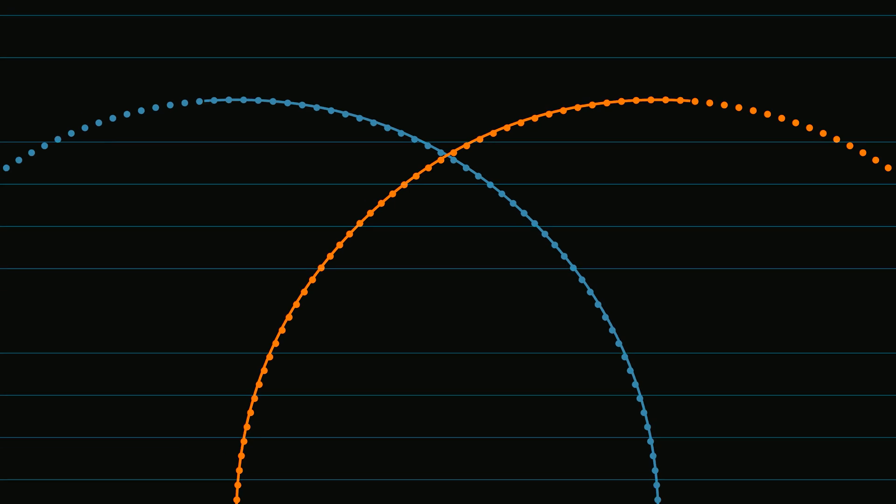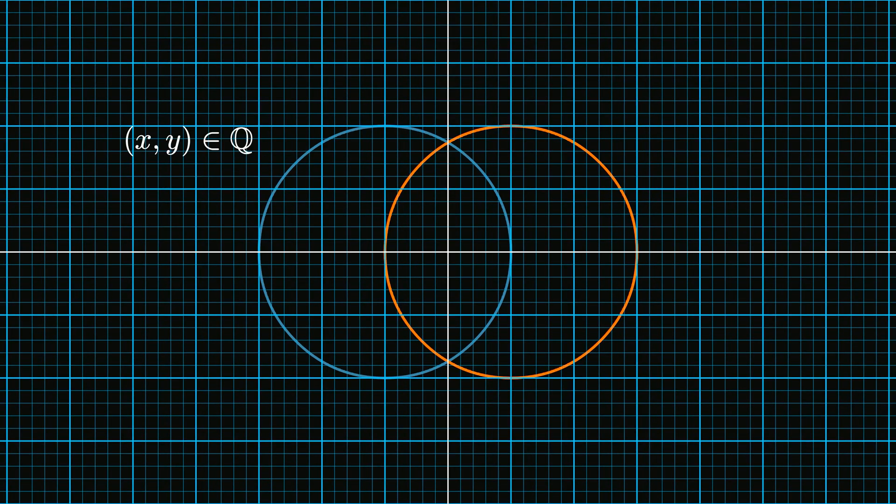A simple example is the following. Consider a flat Cartesian plane where points on the plane are restricted to those with rational number coordinates. On this plane, we can still draw lines and circles, and all of Euclid's postulates still hold true.